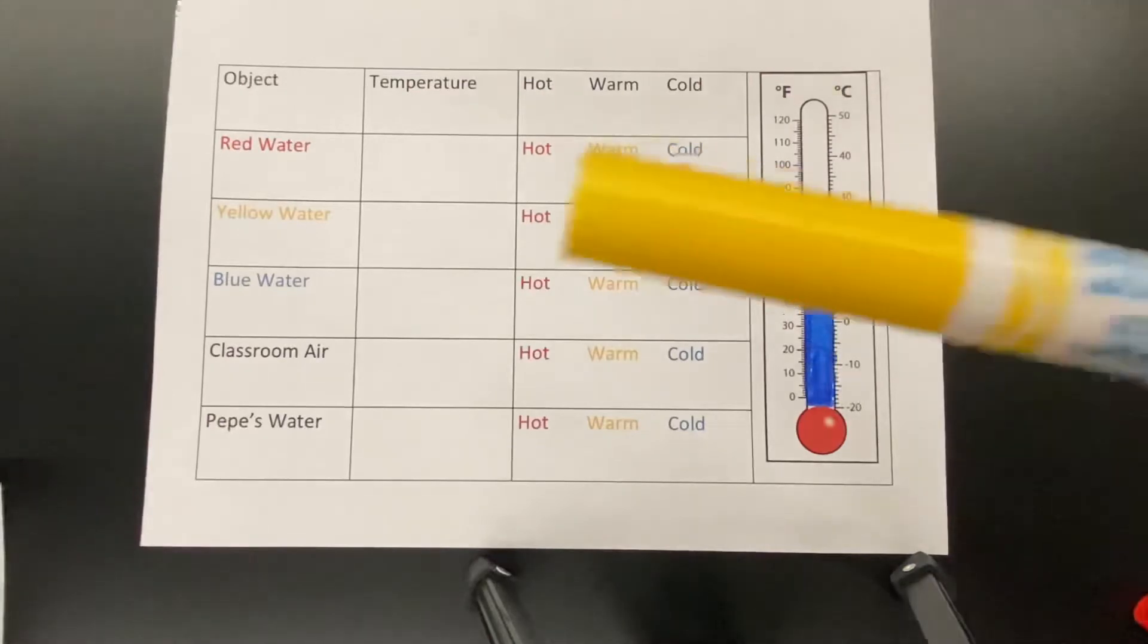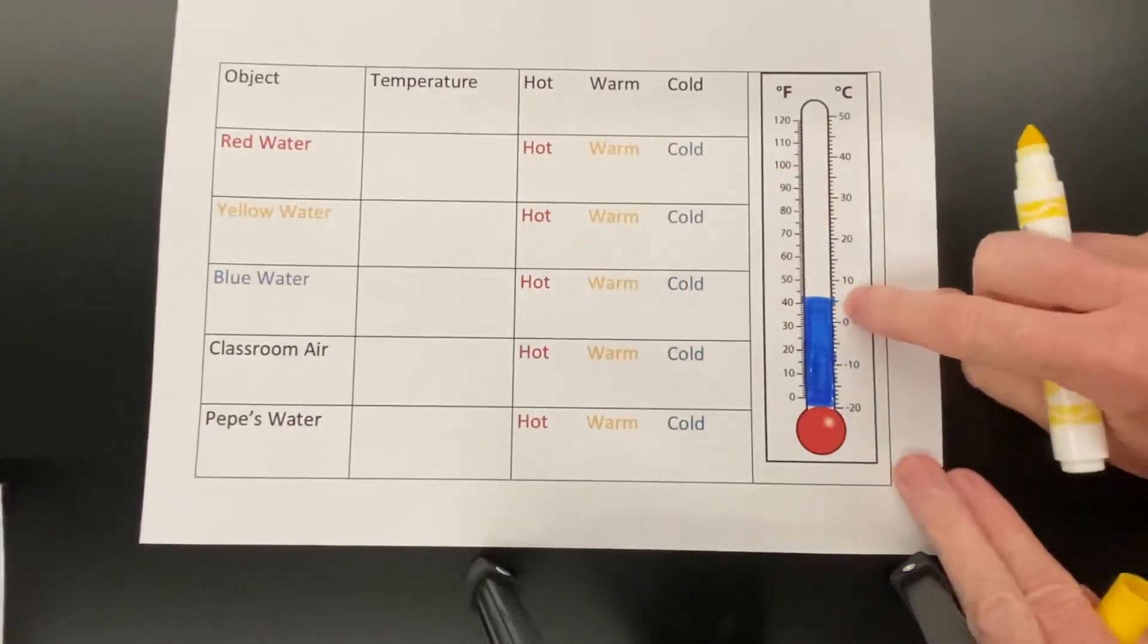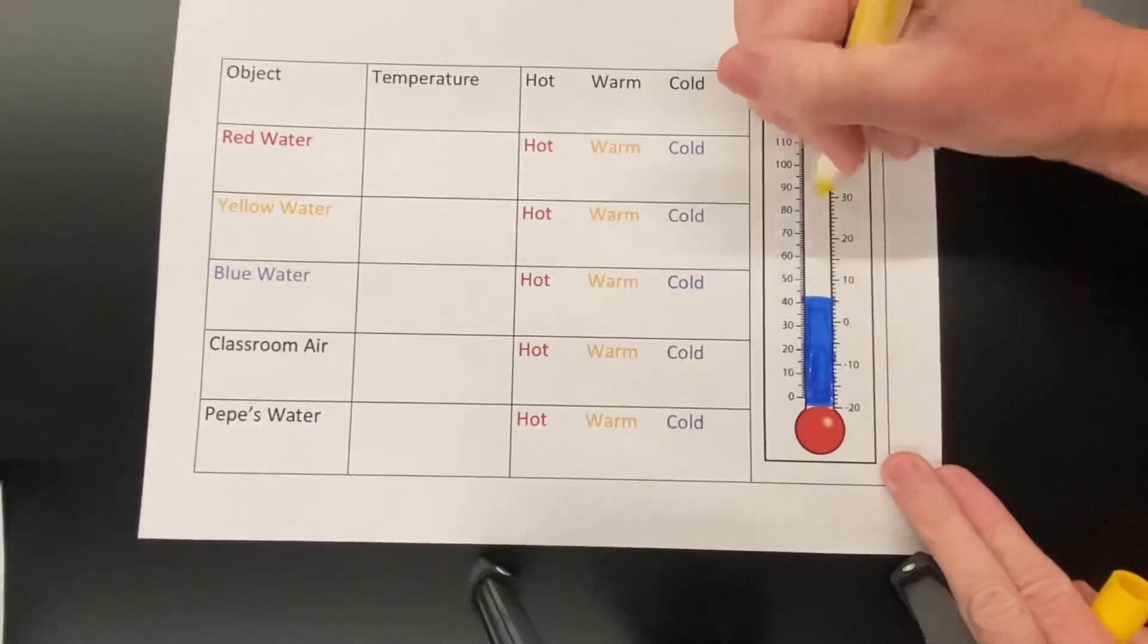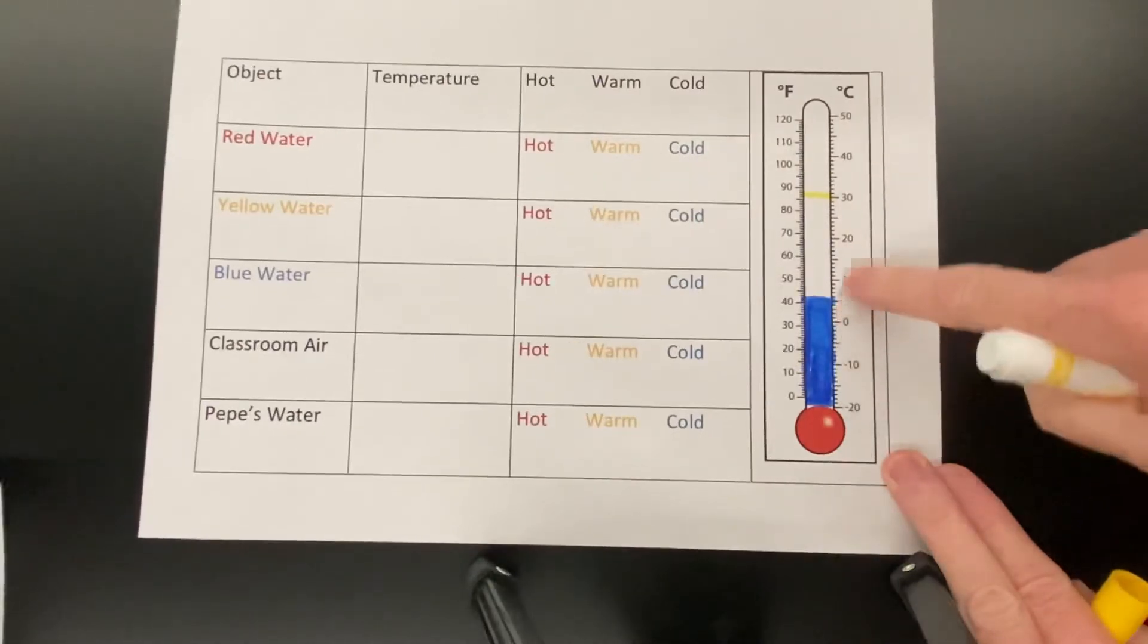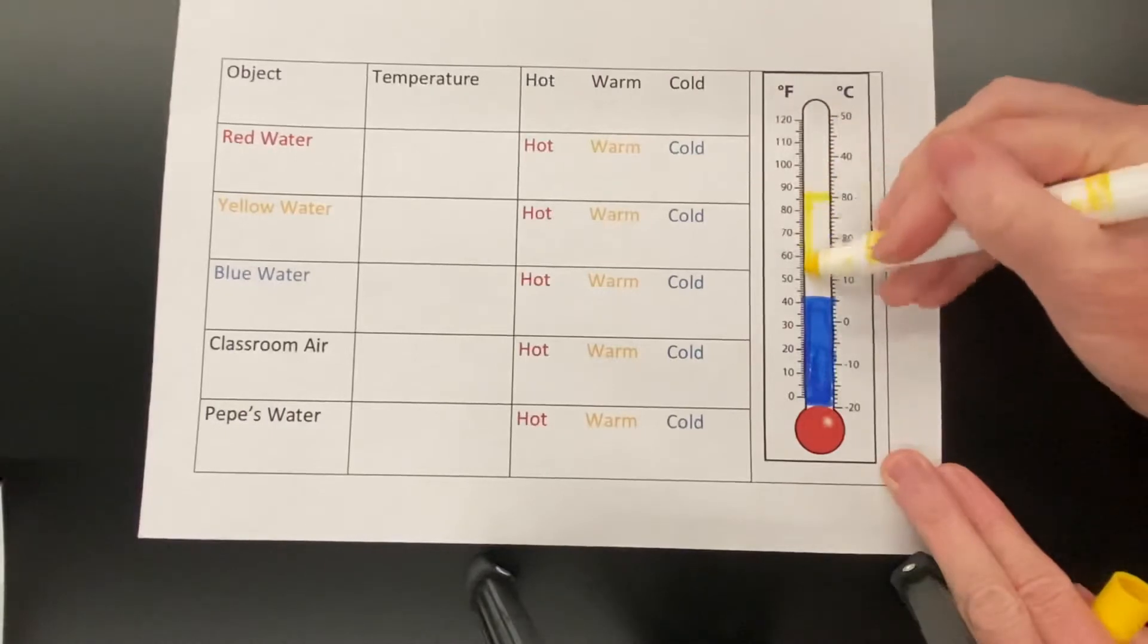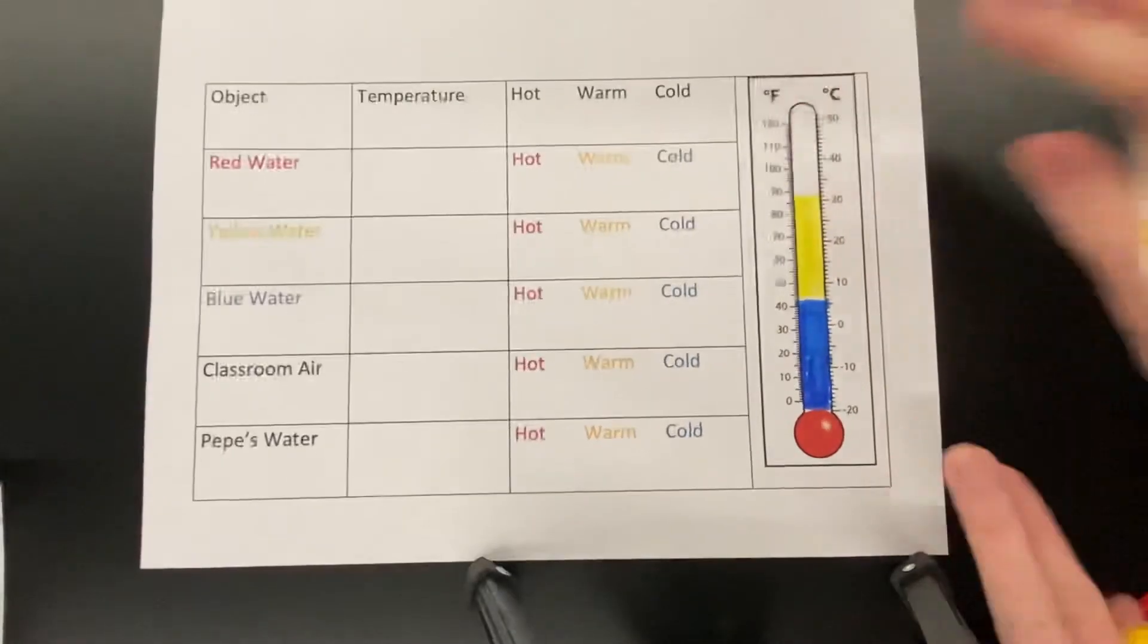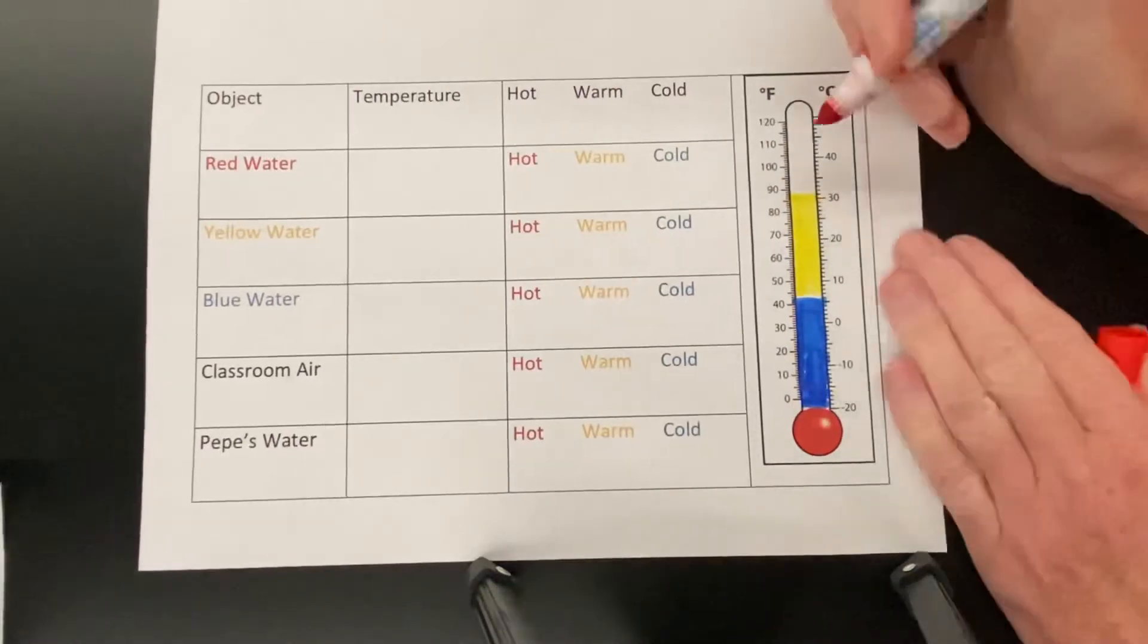Next, I'm going to add yellow for warm. Warm goes from about five degrees all the way up to about thirty degrees. There's the thirty, there's the five, would be all the way up to thirty. So I'm going to put a line here at thirty and then I'm going to color this in yellow.